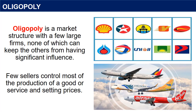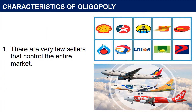Oligopoly is a market structure with a few large firms, none of which can keep the others from having significant influence. Few sellers control most of the production of a good or service and setting prices. Characteristics of Oligopoly: 1. There are very few sellers that control the entire market. Most of these are in the oil industry, transportation, and telecommunication.